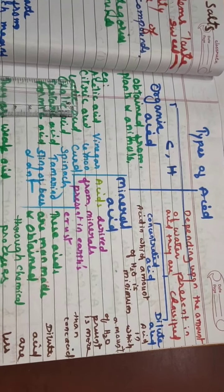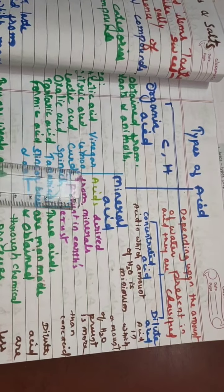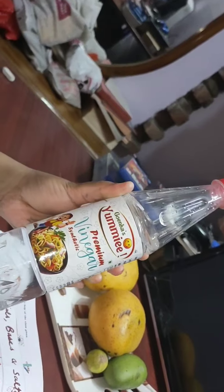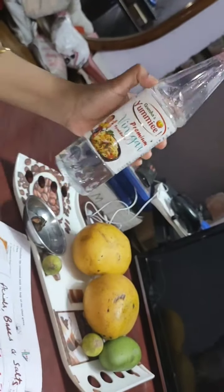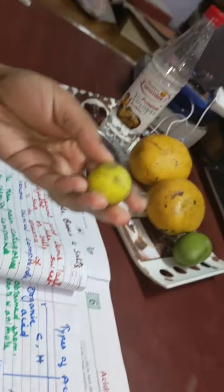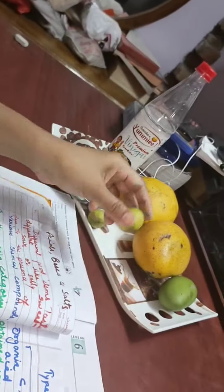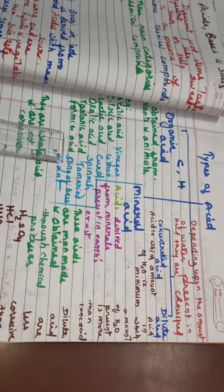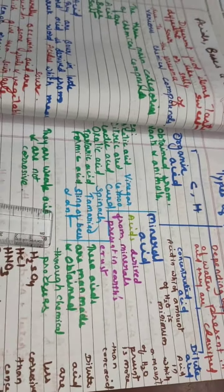Let us see: acetic acid is present in vinegar. Vinegar is used in chow mein and is also used in making pickles. Citric acid is present in lemon, lactic acid in curd, oxalic acid in spinach, tartaric acid in tamarind and Emily, and formic acid in sting of bees and ants.